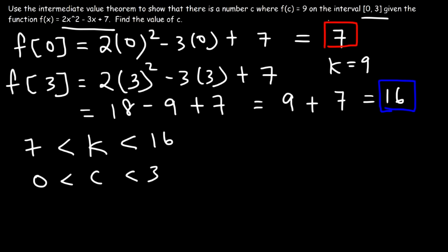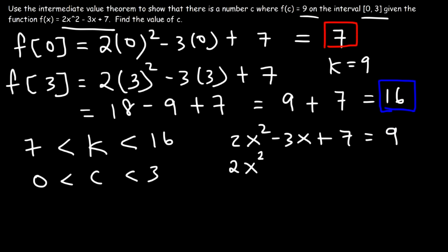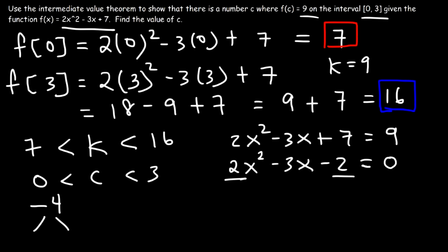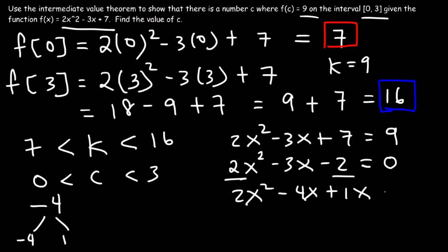Now let's go ahead and calculate c. Let's set the function equal to k or nine. So two x squared minus three x plus seven will be set equal to nine. If we subtract both sides by nine, seven minus nine is negative two, so we're going to have negative two on the left side. Now we need to factor this trinomial — the leading coefficient is not one, it's two. So we need to multiply the leading coefficient by the constant term: two times negative two is negative four. We need two numbers that multiply to negative four but add to the middle coefficient negative three, so that's negative four and one. We're going to replace negative three x with negative four x plus one x and then factor by grouping.